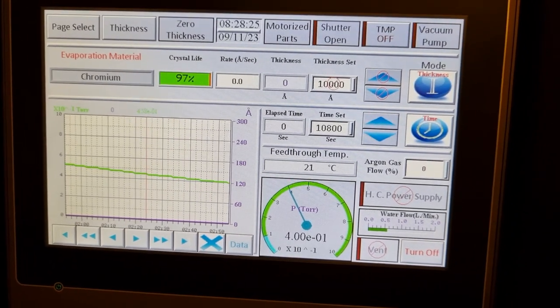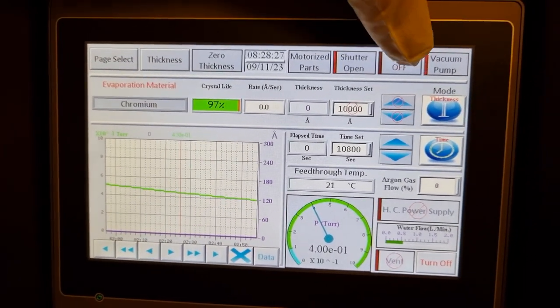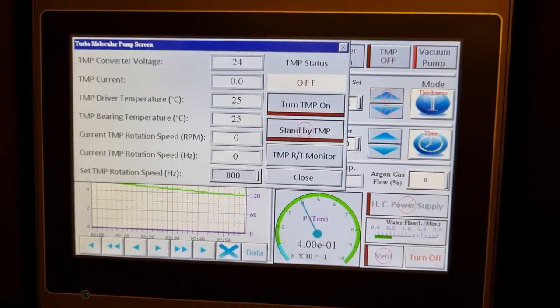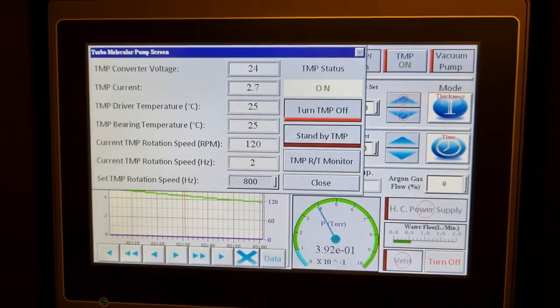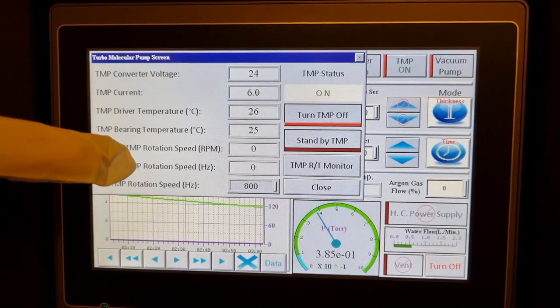All right, we've got the water valve in the right position now. You can see we've got between 0.5 and 1 liters per minute of water flow. We are in range on the pressure gauge. We're below 0.5 torr.